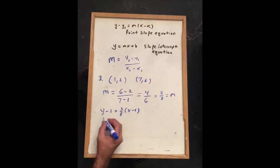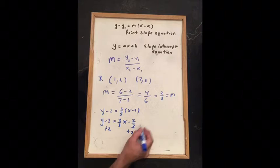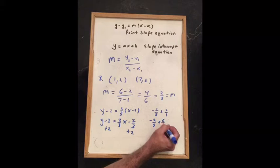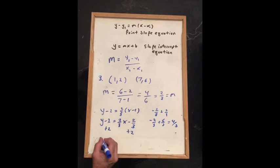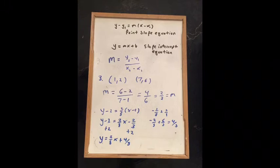I could use (7, 6) but I prefer (1, 2). Now we'll clean it up: y minus 2 equals 2 thirds x minus 2 thirds. We have to add 2 to both sides. Negative 2 thirds plus 2 over 1 becomes negative 2 over 3 plus 6 over 3, which is 4 thirds. So y equals 2 over 3x plus 4 over 3, and there's your answer.